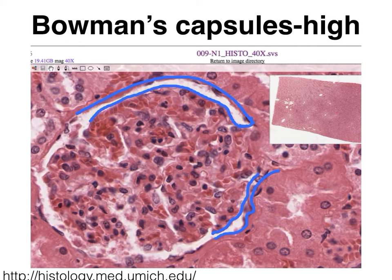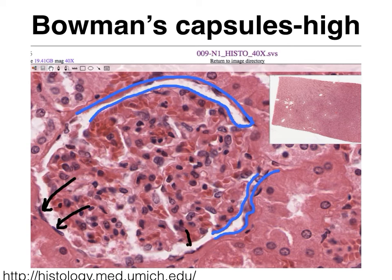So where do we find our simple squamous epithelial tissue? Well, it actually forms the outer wall of our Bowman's capsule. Here you find a flattened nucleus, and here's another flattened nucleus, and here you have several more. I covered some up with the blue marking. But that's where you find the simple squamous epithelial tissue in the Bowman's capsules.